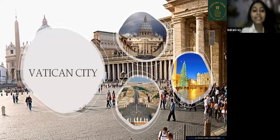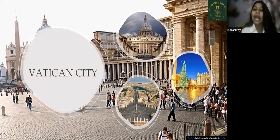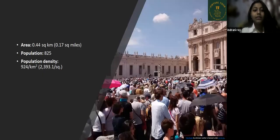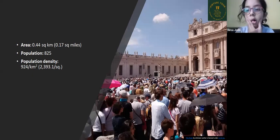Vatican City is established as an independent state and enclave territory, part of one, located within Rome. They have their own laws and own regulations. The area of Vatican City is 0.44 square kilometers, population is 825, and population density is 924 per square kilometer.